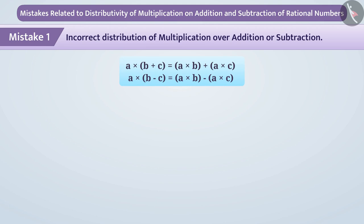For example, if children are asked to distribute 1 by 7 into bracket 2x minus 5, then children write it as 1 by 7 multiplied by 2x minus 5.